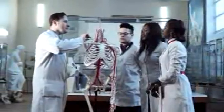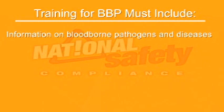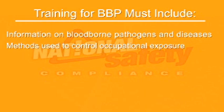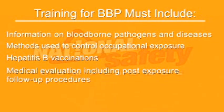OSHA's Bloodborne Pathogens Standard requires employers to provide information and training to workers. Employers must ensure their workers receive regular training that covers all elements of the standard, including but not limited to information on bloodborne pathogens and diseases, methods used to control occupational exposure, hepatitis B vaccinations, and medical evaluation including post-exposure follow-up procedures. Employers must offer this training on initial assignment, at least annually thereafter, and when new or modified tasks or procedures affect a worker's risk of occupational exposure.